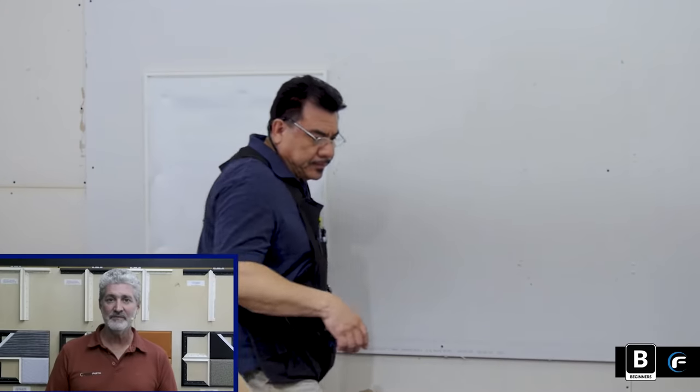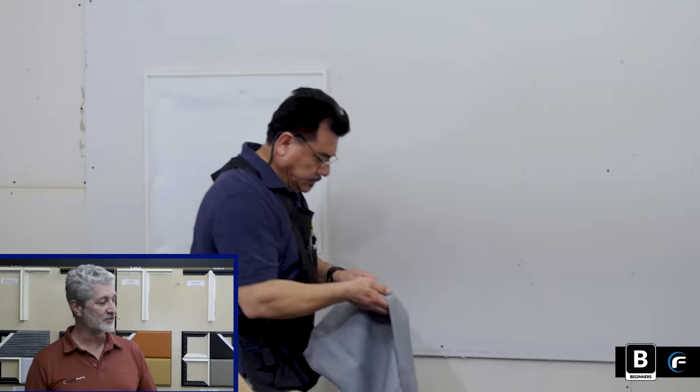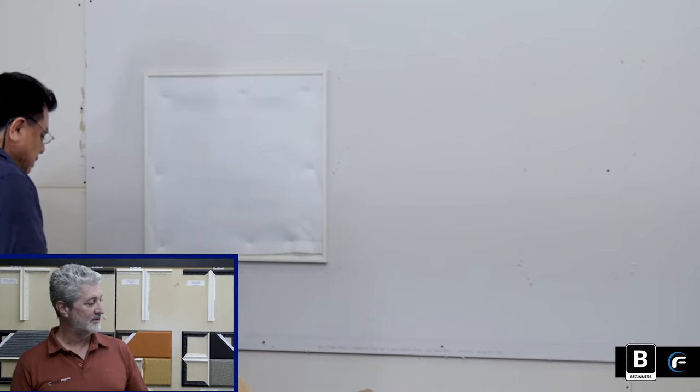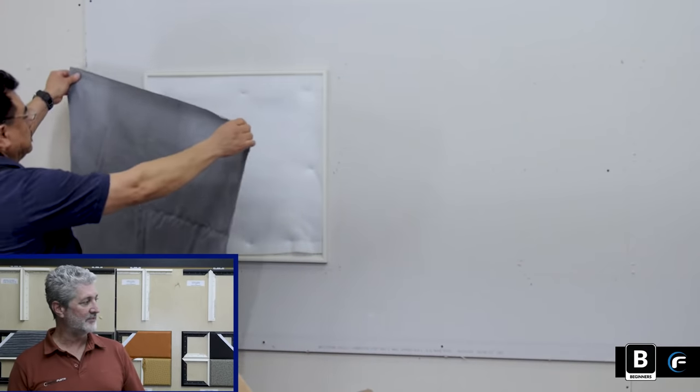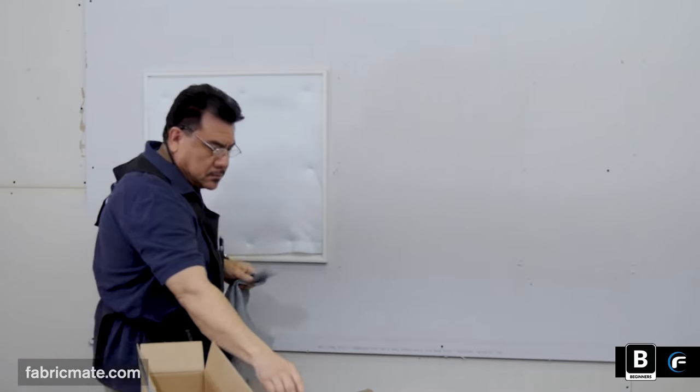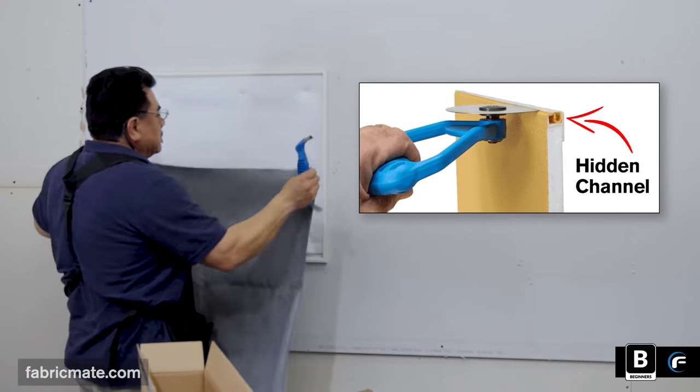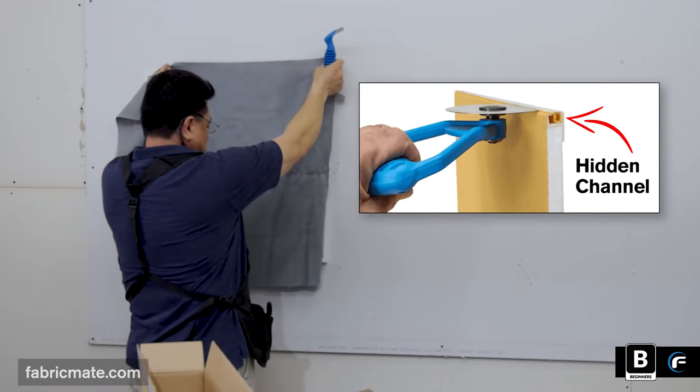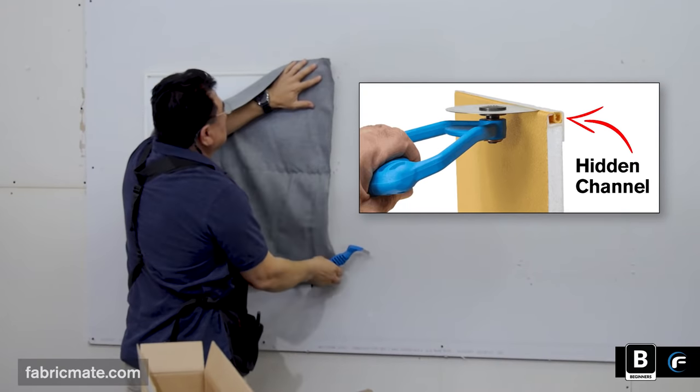And there you have it. The mounting frame is up. The backing is in. Now you'll see the fabric being prepared to be applied onto the fabric mounting frame. If you haven't already understood, the fabric mounting frame has a hidden channel in there. And you'll see in a minute that it will receive the fabric and hide it once it's completely tucked in.